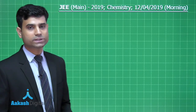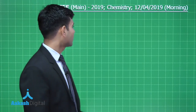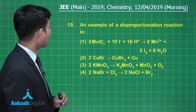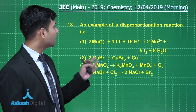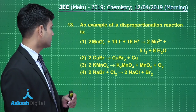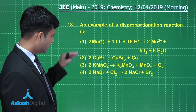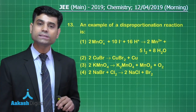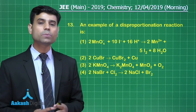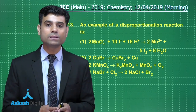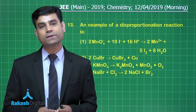Now let's move to the next question. It says: an example of a disproportionation reaction is — here we have four reactions. Students, in case of a disproportionation reaction, the same element oxidizes as well as reduces.